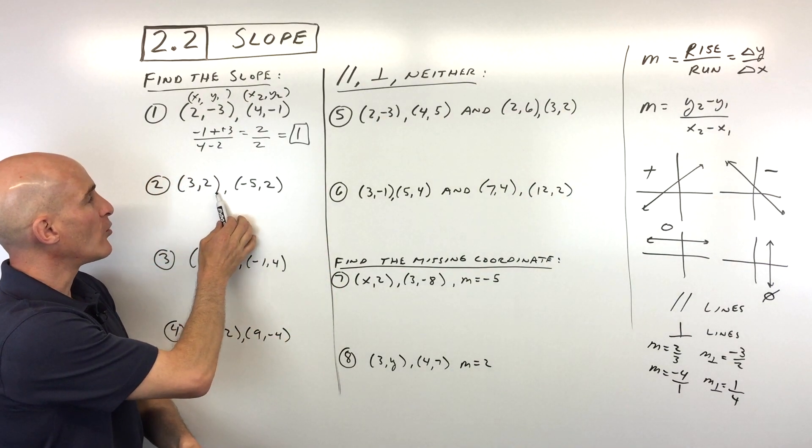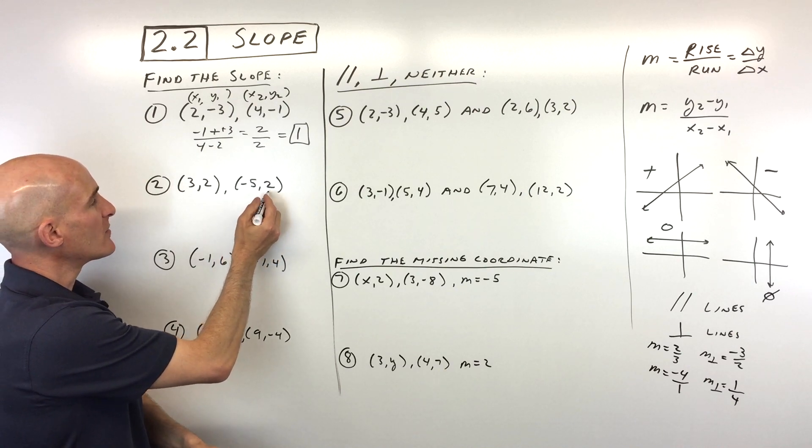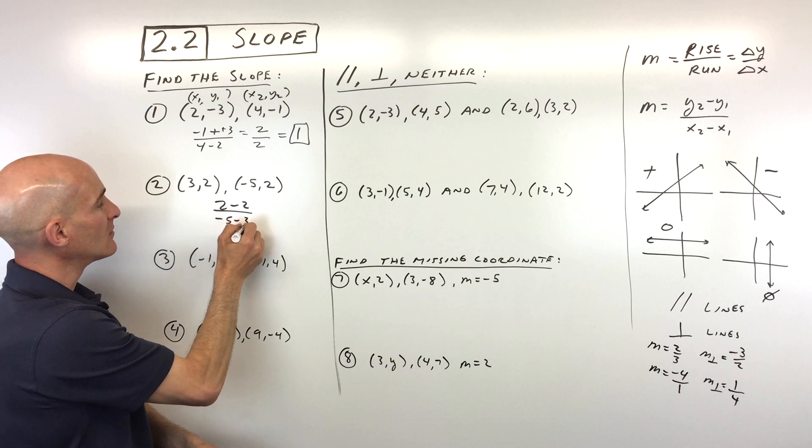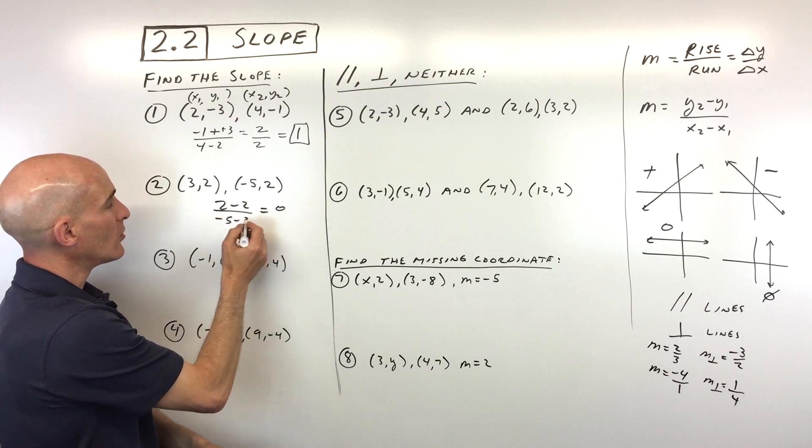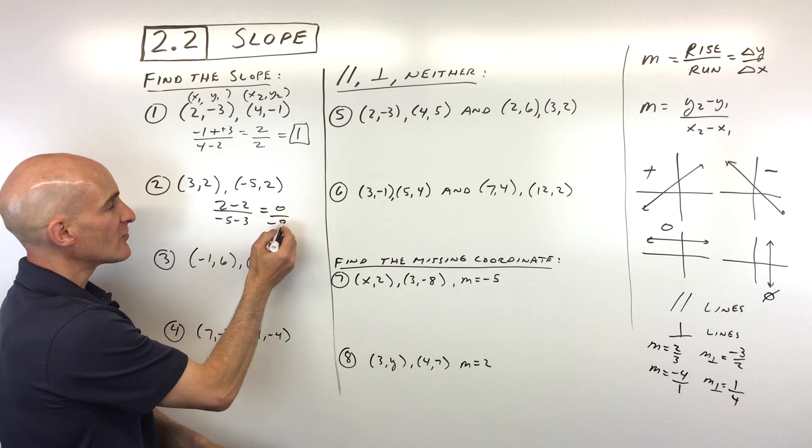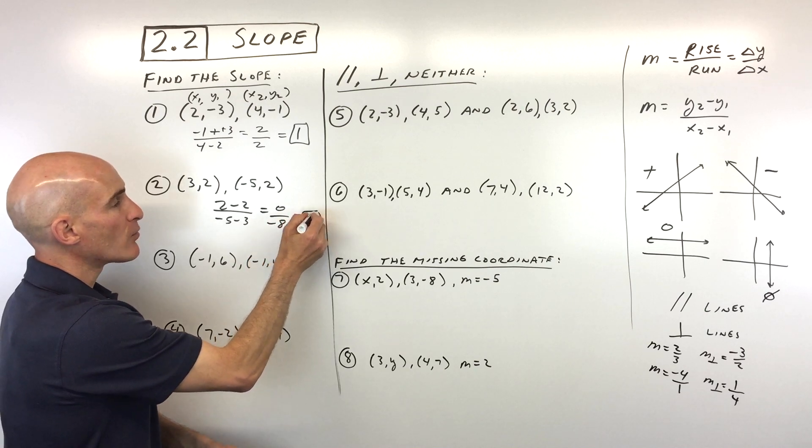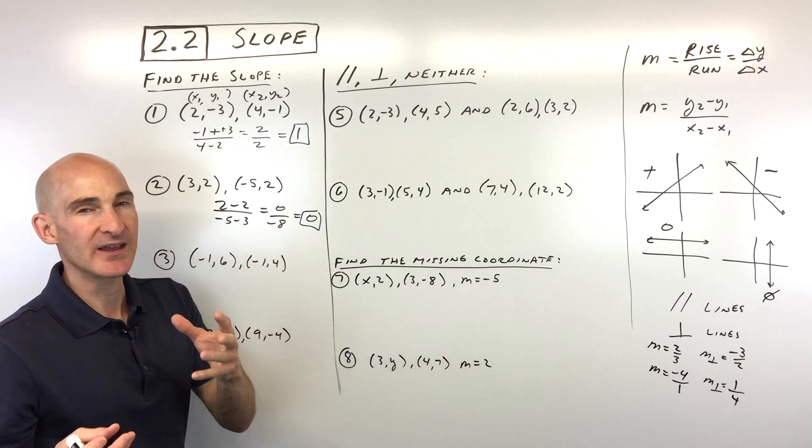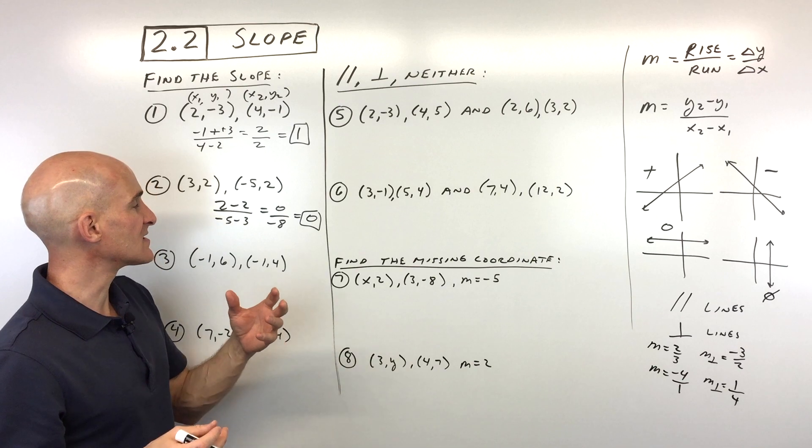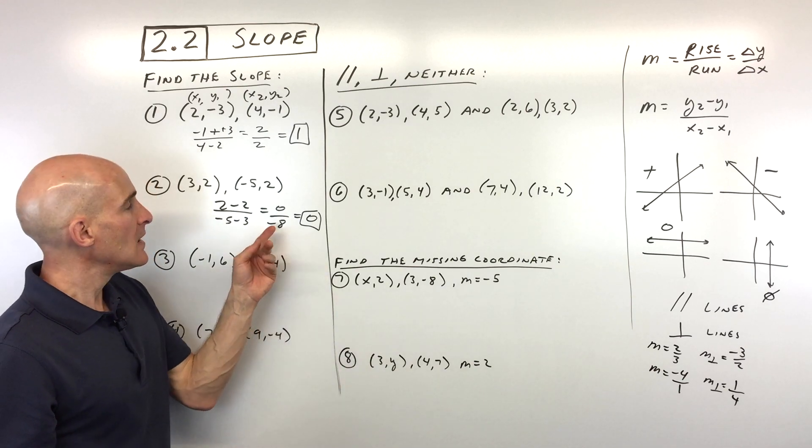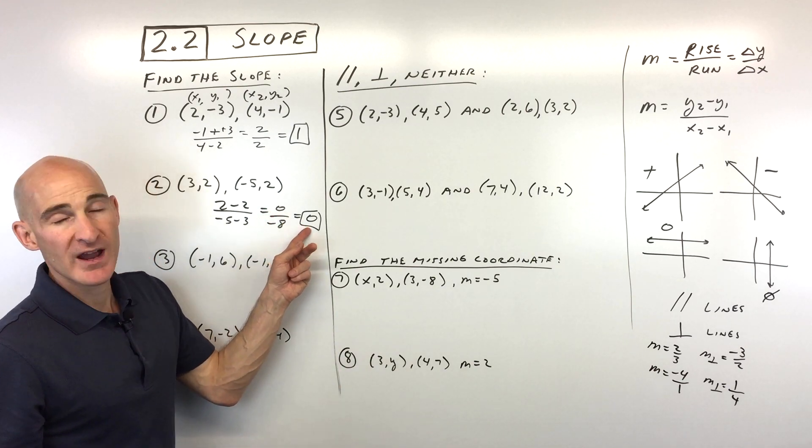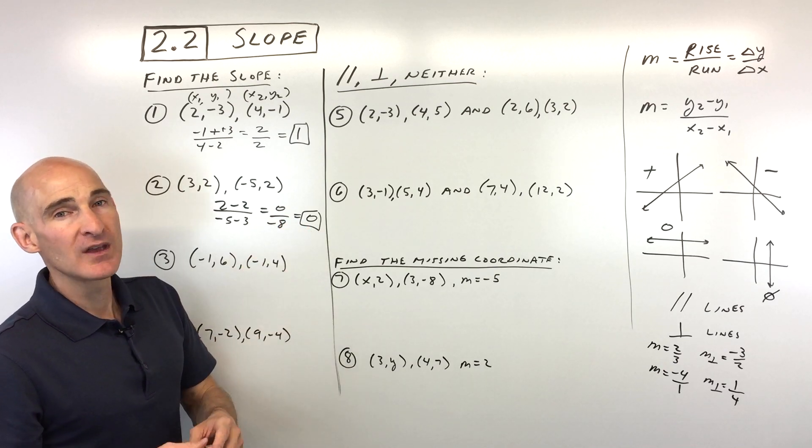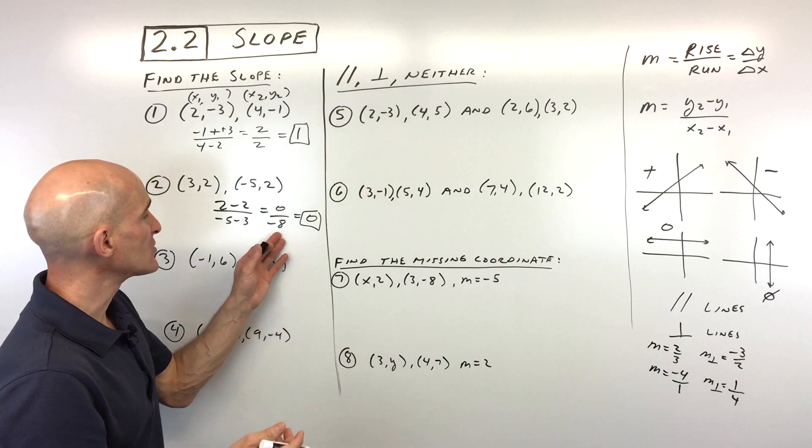So let's go to number 2. So what do you think for this one? We've got the points (3, 2) and (-5, 2). So here what I'm going to do is I'm going to do 2 minus 2 over -5 minus 3. 2 minus 2 is 0. -5 minus 3 is -8. 0 divided by -8 equals 0. Now this is an important concept because some students get a little bit confused when they see the 0. Does that mean it's undefined? Does it mean it's 0? Does it mean it's not possible? When the 0 is in the numerator, that means that the fraction equals 0, okay?